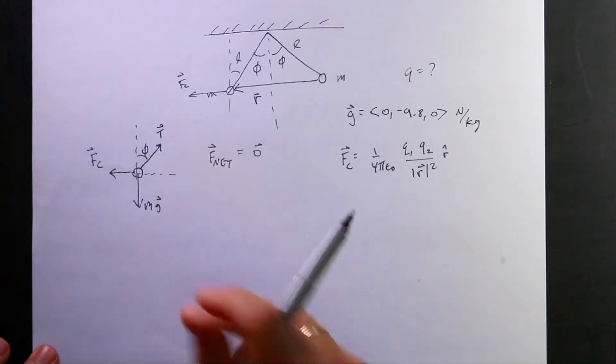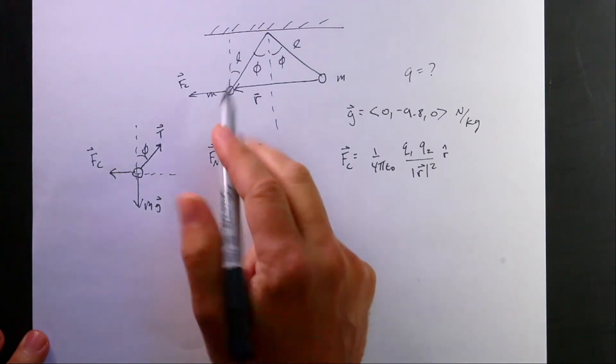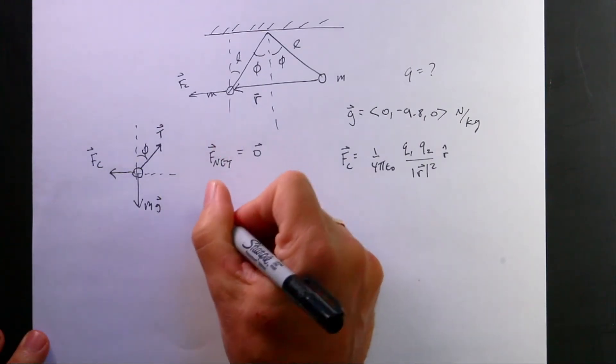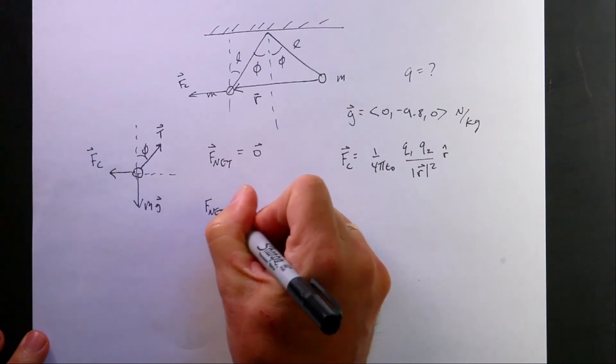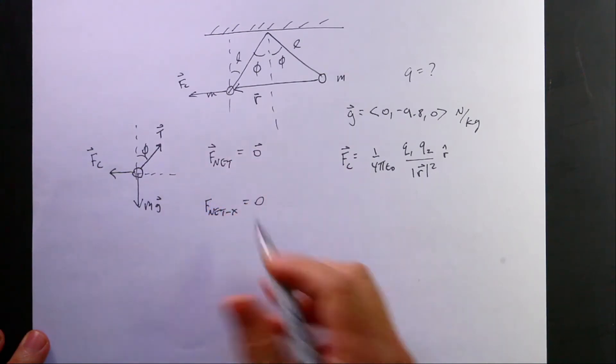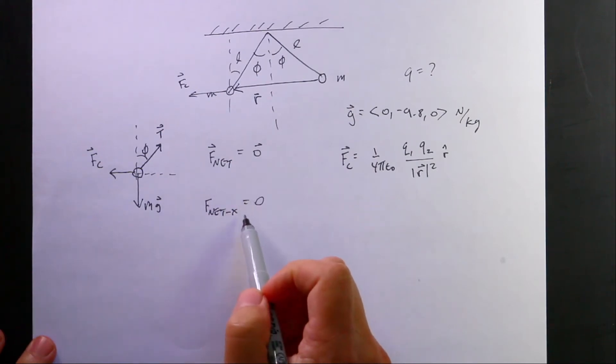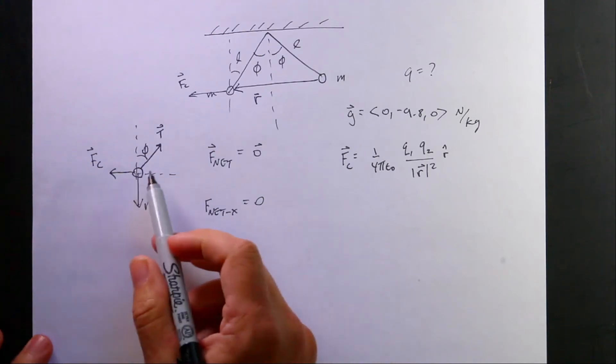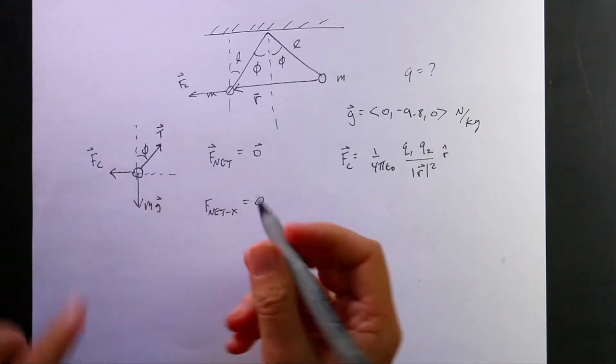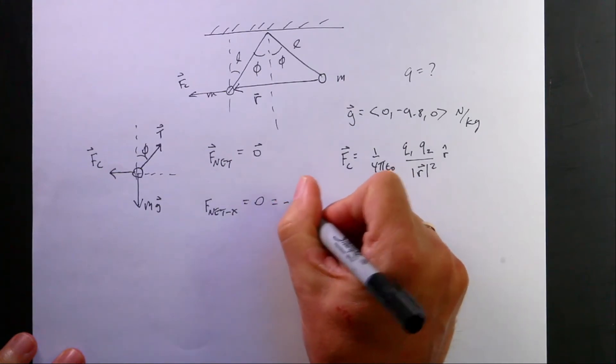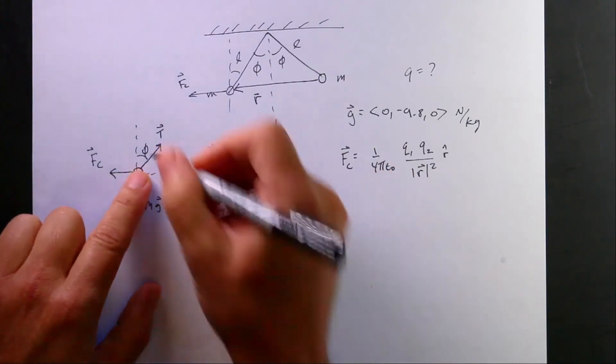So let's deal with this equation in two dimensions. I'm just looking at that ball right there. So let's say this f net x equals zero. If the vector net force is zero, then the vector force in the x direction has to be zero. So what forces do I have in the x direction? Well, I have this Coulomb force. I'm going to say this is equal to negative FC. And then I have part of the tension.